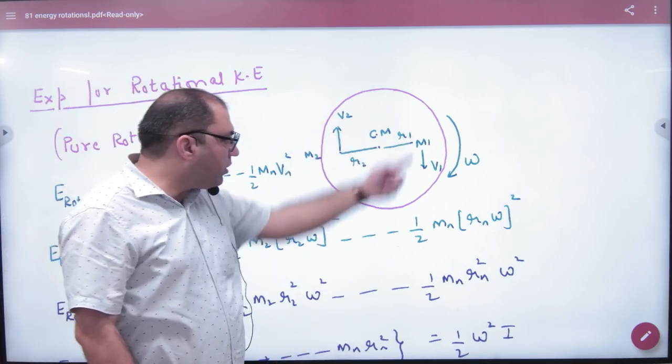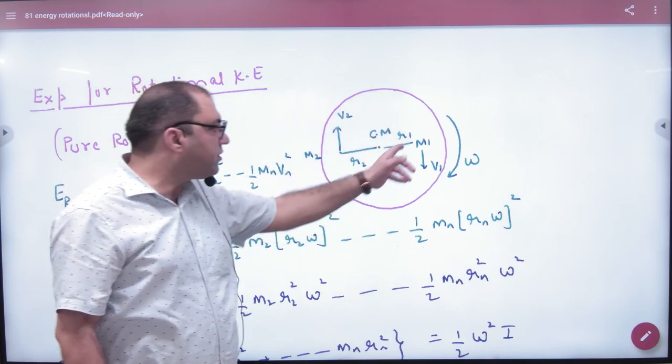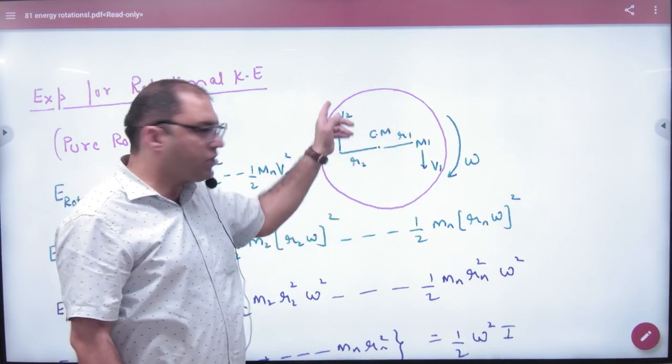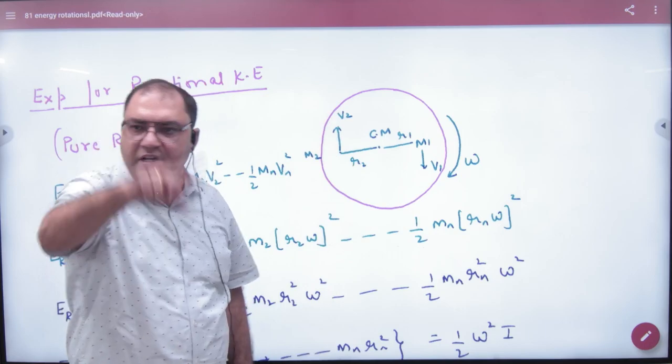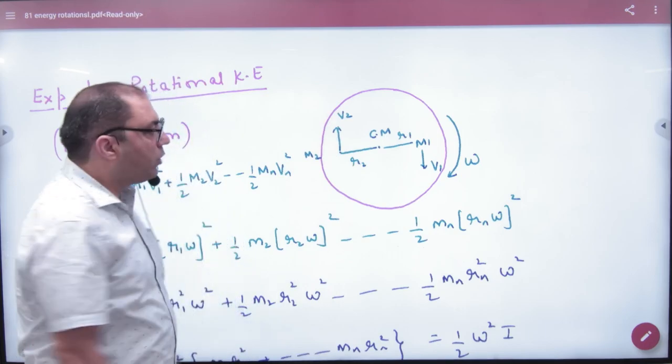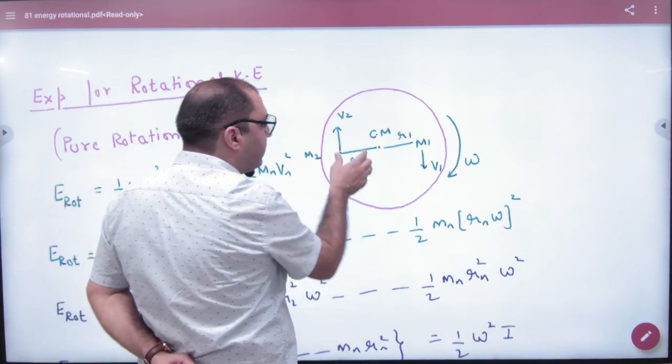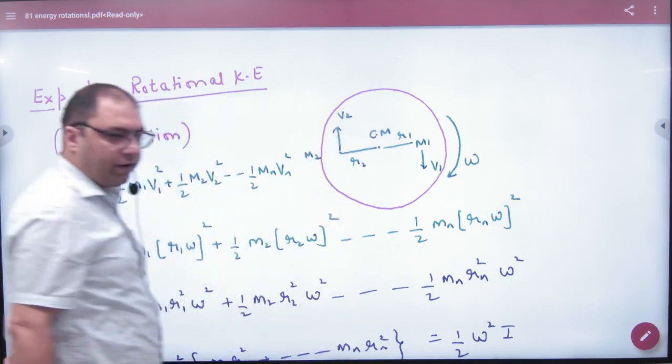So, when this is going around with omega constant, what is the tangential velocity v1? Tangential velocity v2? Because it is going around in a circle as point masses. So, what is v1? r1 omega. What is v2? r2 omega.